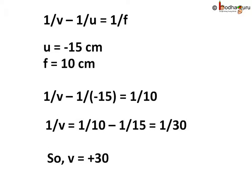Taking 1 by 15 to the right hand side, we get 1 by V is equal to 1 by 10 minus 1 by 15. Taking the LCM, we get 1 by 30. So, V is equal to plus 30.